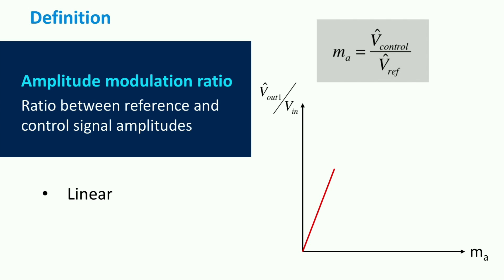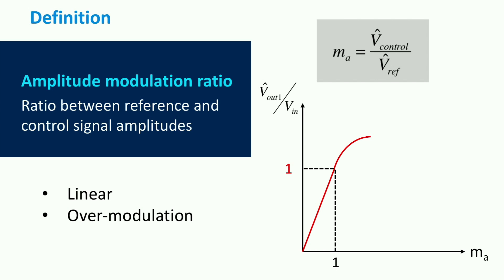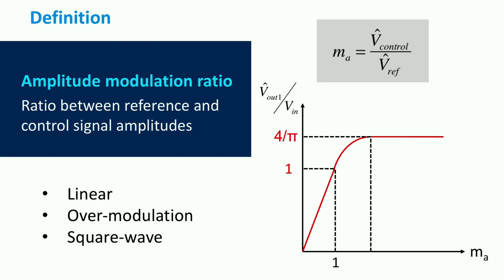In this mode of operation, the frequency and the amplitude of the output signal can be fully controlled. This mode of operation extends up to the point where the amplitude of the sine control signal is equal to the sawtooth reference signal. At this point, the inverter enters the so-called over-modulation region, where the output voltage amplitude continues to increase until a specific value of MA, for which the inverter starts working in a square wave mode. In this mode of operation, the output signal becomes a square wave, and its first harmonic amplitude is 4 over pi times the input voltage amplitude.